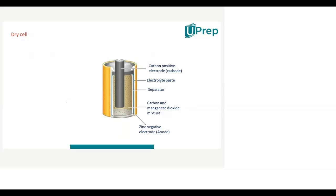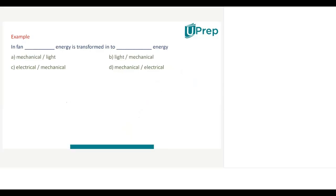Suppose the electrolyte paste reacts with some material, and after the reaction, positive ions and negative ions are produced. Those positive and negative ions must be pushed towards their respective electrodes to get current. That push comes from chemical energy. That particular push of charges to the respective electrode is generally called electromotive force. The force which is responsible for making charges move is known as electromotive force.